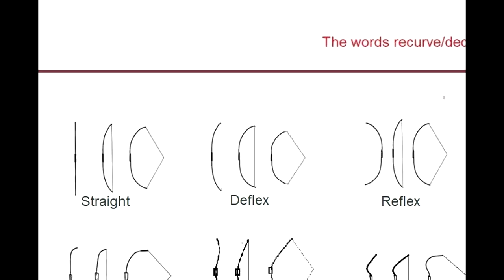When it comes to the shapes of deflex, reflex, and straight: reflex is more efficient but puts more stress on the material. Deflex is less stress on the material, less efficient, but easier to string. Reflex is harder to string. And straight is just in between.